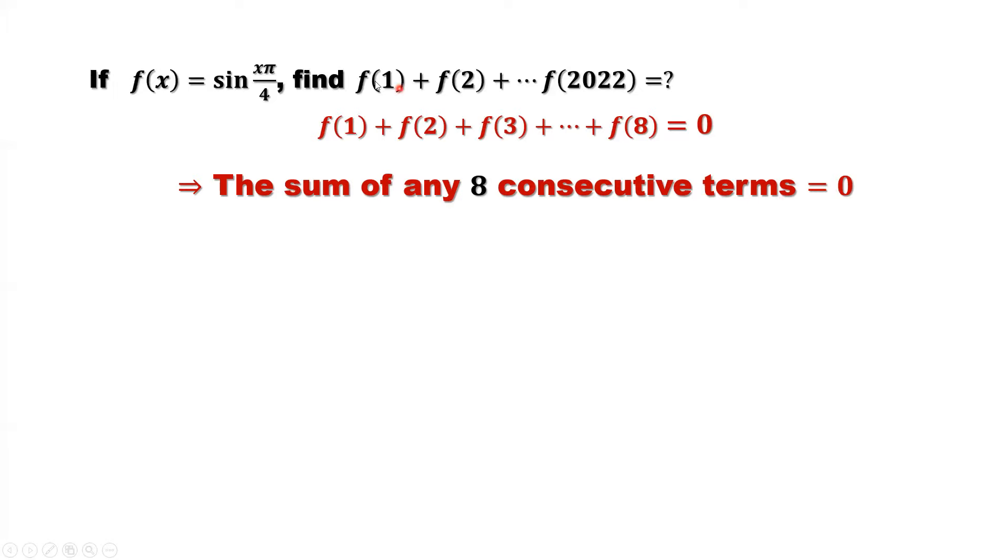It is important to simplify this. So here, totally how many items here? We have 2022. We can cut 2022 items into sums, each with eight consecutive terms. So here, how many eights inside of 2022, that's 252. The remainder is six.